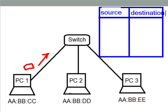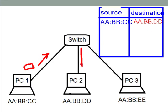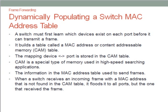The table consists of source and destination information. For example, the source hardware address might be AA:BB:BB:CC and the destination hardware address is BB:DD. The switch gets all this information from the frame header itself — when the switch reads the frame header, it is able to get all this information and send to the correct destination.